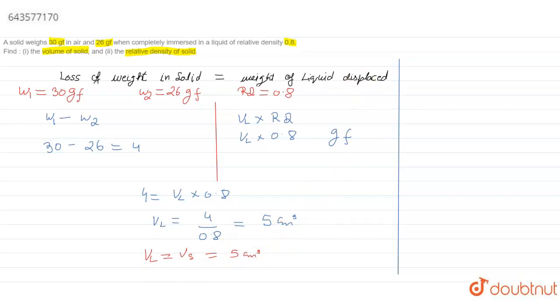So the next partial part of the question states that we have to calculate the relative density of the solid. Density of the solid is equal to mass upon its volume. Please make sure that this mass is of the solid that is in air, that is equal to 30 upon the volume that we have just calculated, volume of the solid that we have just calculated. So this turns out to be 6 grams per centimeter cube.